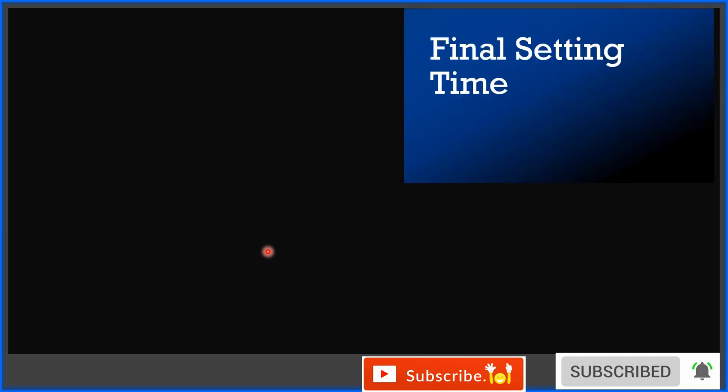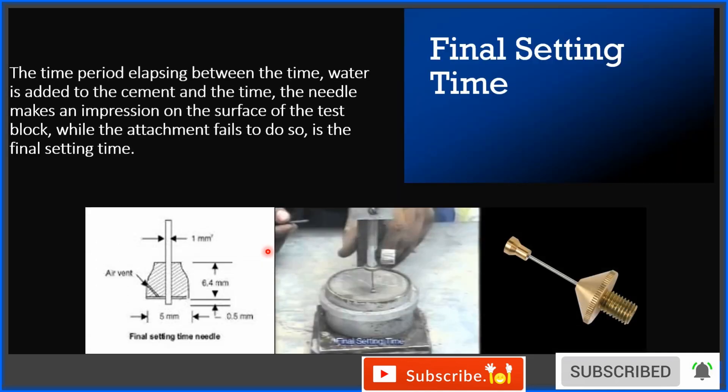Now let's see final setting time. Final setting time is the time period elapsing between the time water is added to cement and the time the needle makes an impression on the surface of the test block while the attachment fails to do so.